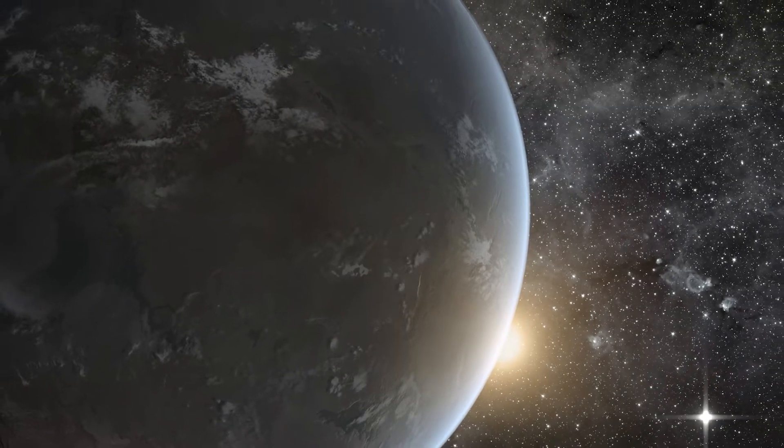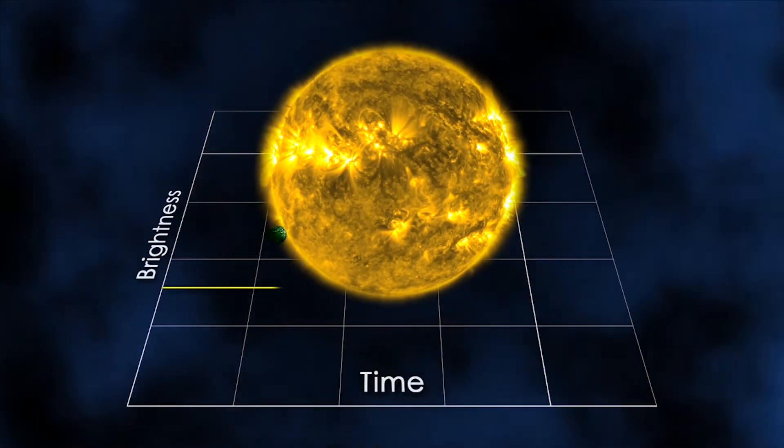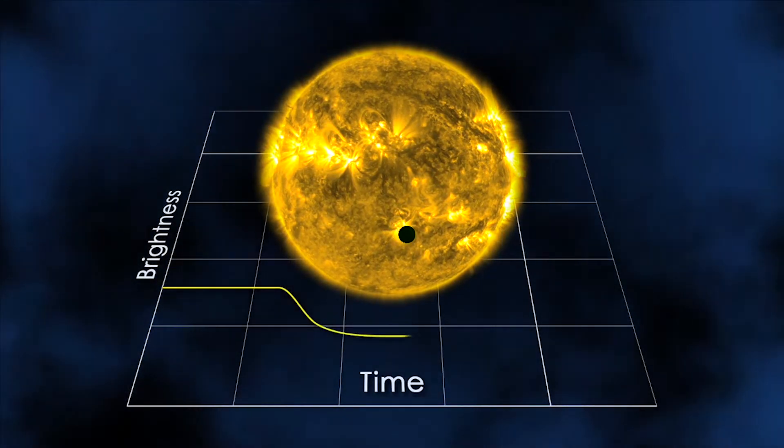Exoplanets, planets outside our solar system, are believed to outnumber the 300 billion stars in the Milky Way. But small, rocky planets are harder to study from afar than gas giants.